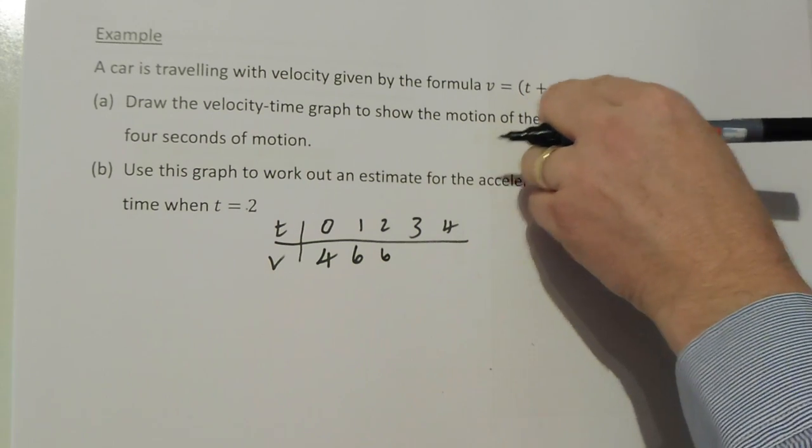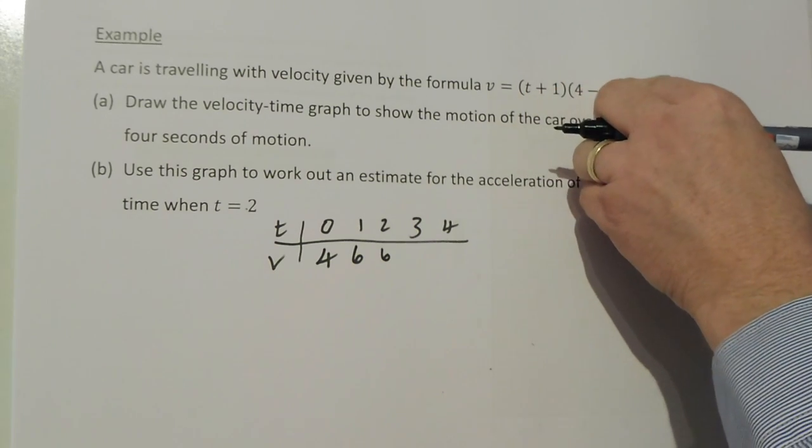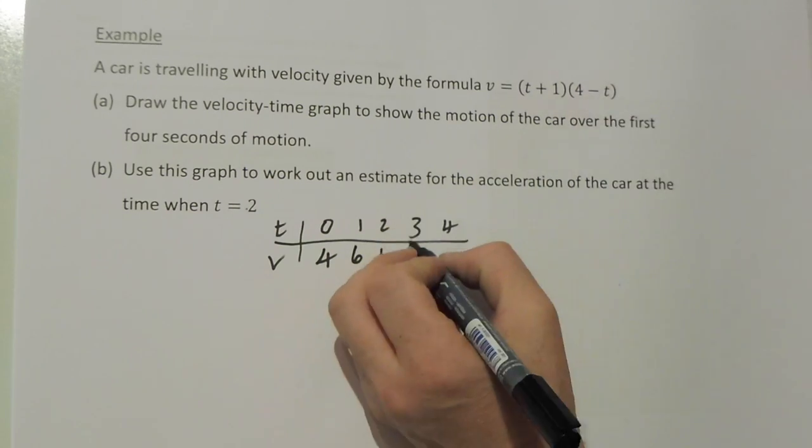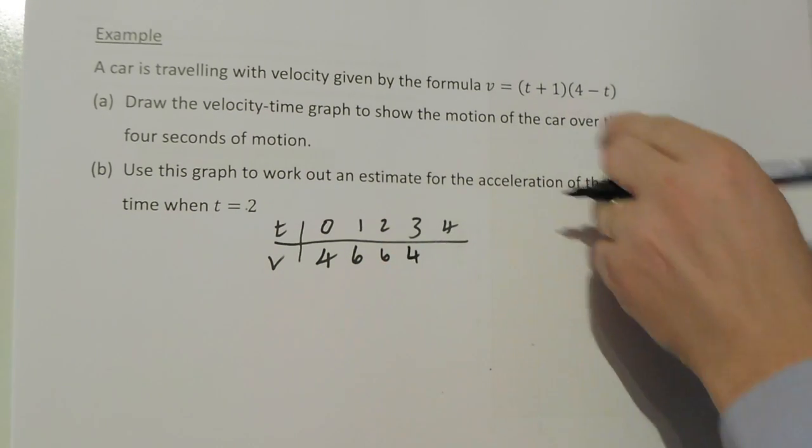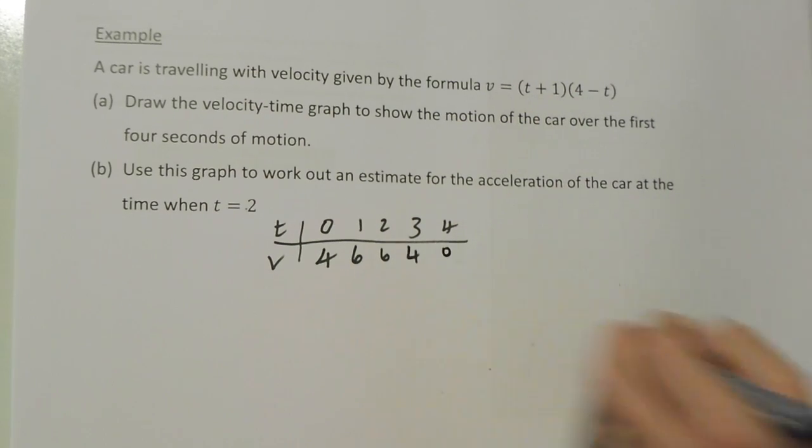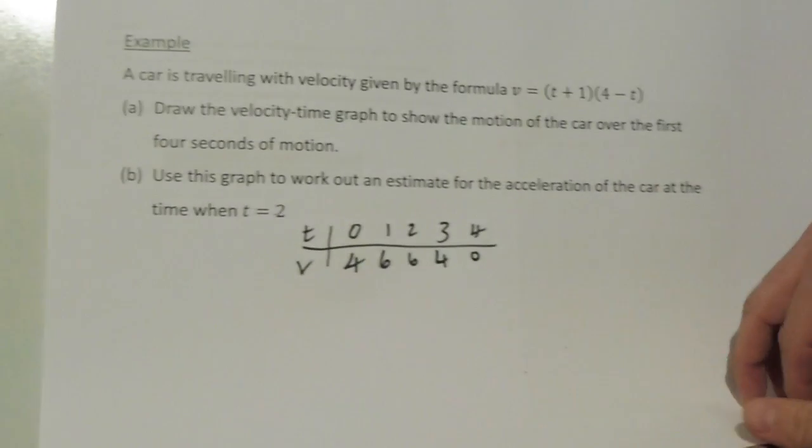If I put t=3: 3+1 is 4, 4-3 is 1, and 4×1 equals 4. When I put t=4, I get 0.